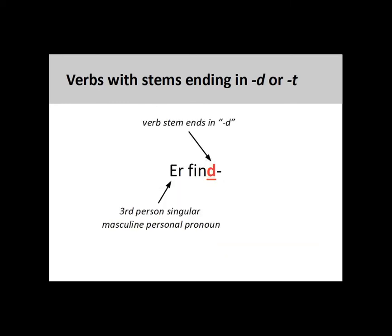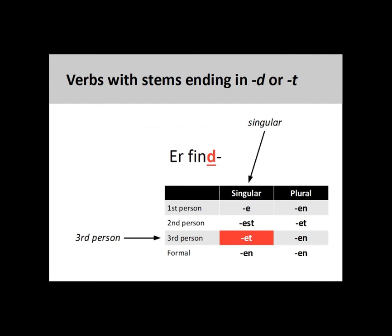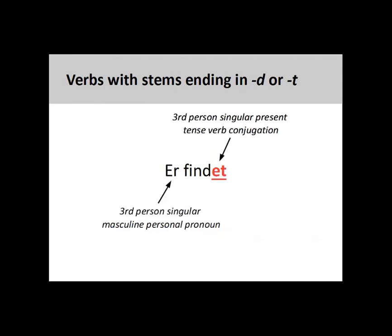To conjugate verbs ending in D or T, we follow the same process as described earlier, but with one extra step. Remove the infinitive ending for the verb 'to find.' Notice that the verb stem ends in D, and determine both the number and person of the subject — here the subject is a third person singular masculine personal pronoun. We then need to find the correct third person singular verb ending on the chart; here the appropriate ending E-T is marked in red. We then add that ending to the verb stem to produce 'er findet,' he finds. Both the subject and verb are in third person singular, creating subject-verb agreement.